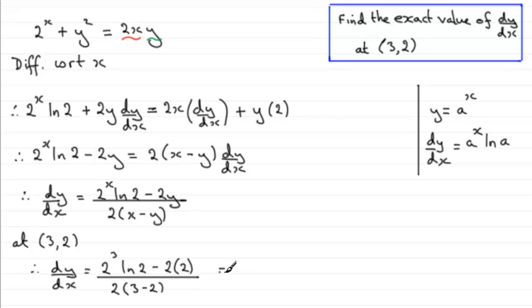So when we clean this up, what have we got? We've got 2 cubed, which is clearly 8, natural log of 2, and then we've got minus 4, and that's all divided by 2 times essentially 1, so that's 2. And we can divide both terms on the top by the 2, and that's going to give me 4 times the natural log of 2 minus 2. And there you go. There's your answer. There's your exact value for the gradient at the point (3,2).